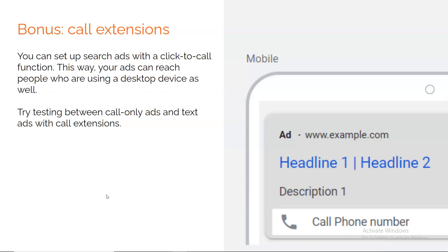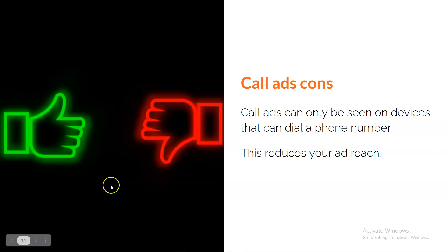Here's a bonus tip: create regular PPC campaigns with the click-to-call function. This way, your ads will also reach people using a desktop device. With call ads, you can only reach people on mobile phones because desktop devices can't dial a phone number. Try testing between call-only ads and text ads with call extensions. The main con of call ads is that they can only be seen on devices that can dial a phone number, which reduces your ad reach. This is why it's suggested you don't solely rely on call ads, but instead implement them into your overall marketing strategy.